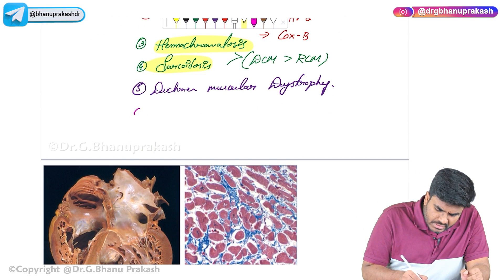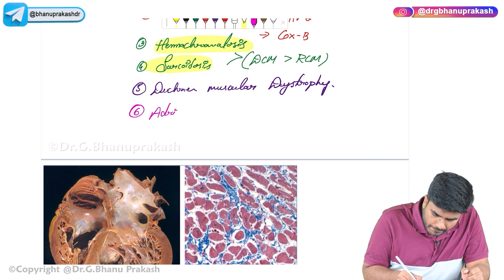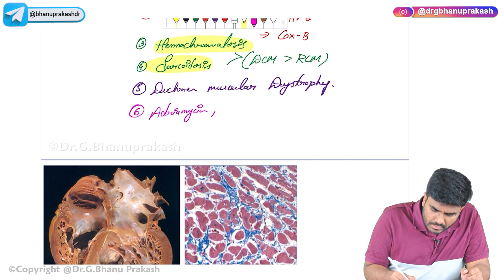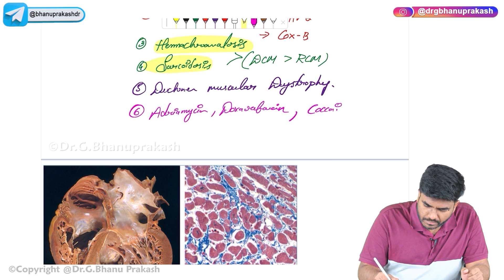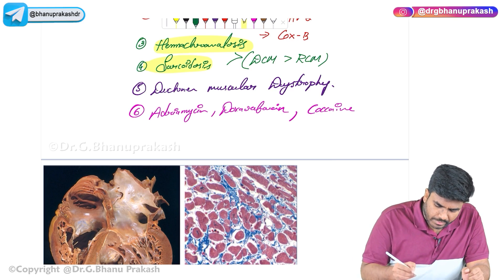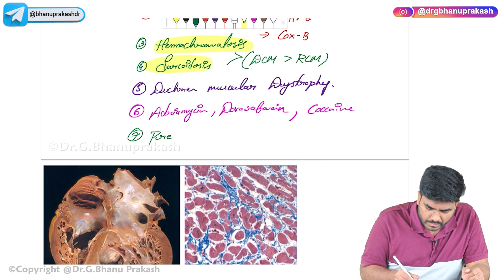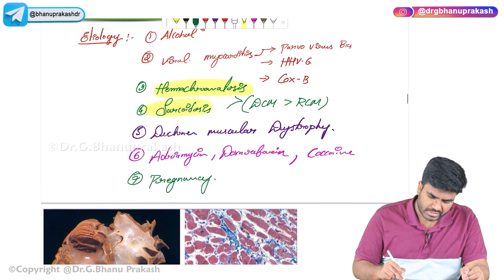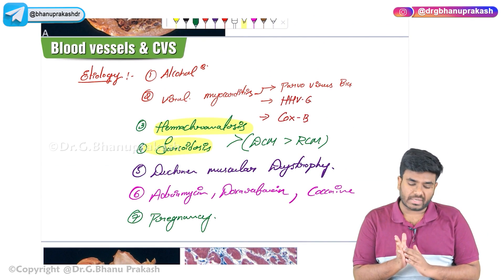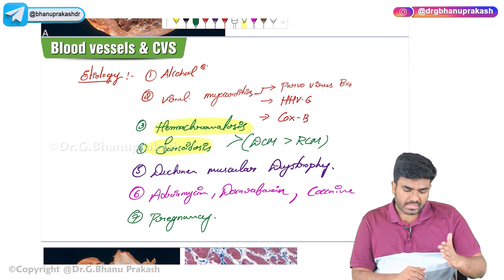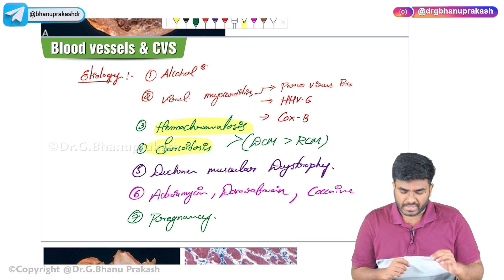Other causes include drugs like adriamycin or doxorubicin, cocaine, and states like pregnancy. So all these conditions — alcohol, viral myocarditis, hemochromatosis, sarcoidosis, drug use, and pregnancy — can lead to dilated cardiomyopathy.